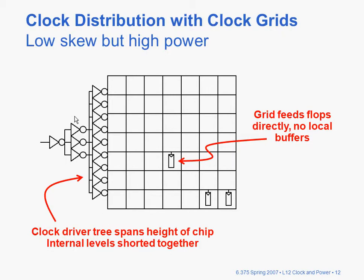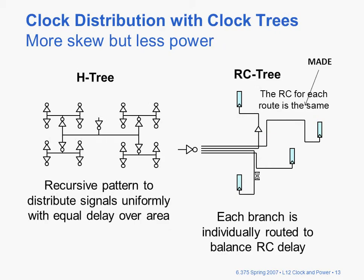One of the means you can accomplish clock distribution is to use a clock grid. It has low skew but high power. The idea behind it is you have a cascade set of buffers to drive a relatively large capacitive load, and you want to drive this thing synchronously so that these registers see very little difference in clock arrival time.